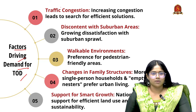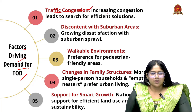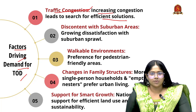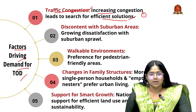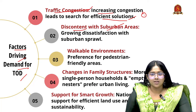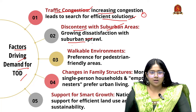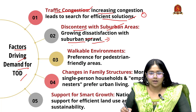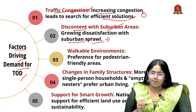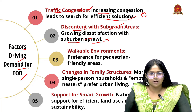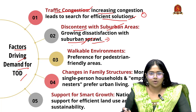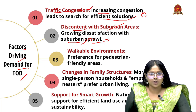Now looking at the factors driving demand for Transit Oriented Development. First is traffic congestion — increasing traffic congestion leads to a search for efficient solutions like transit hubs. Next is discontent with suburban areas — many people prefer to live in urban areas for opportunities and amenities. Suburban sprawl refers to development in previously underdeveloped areas, and people dissatisfied with suburban sprawl see moving to urban areas as a better opportunity for increased productivity.